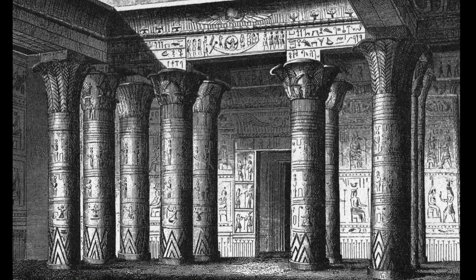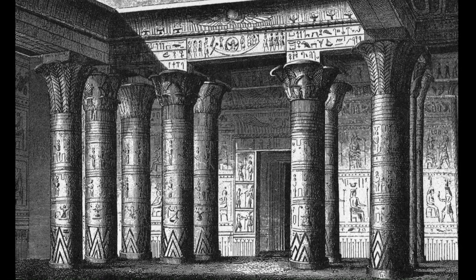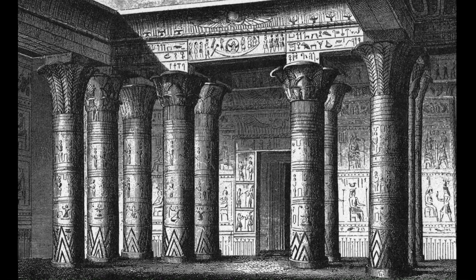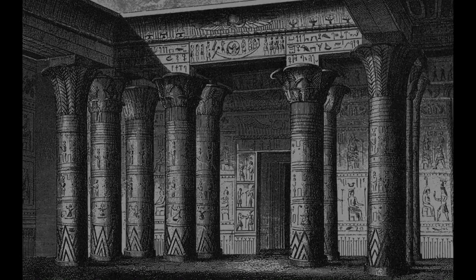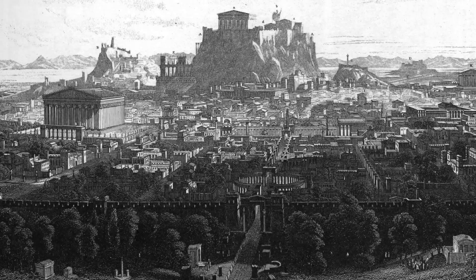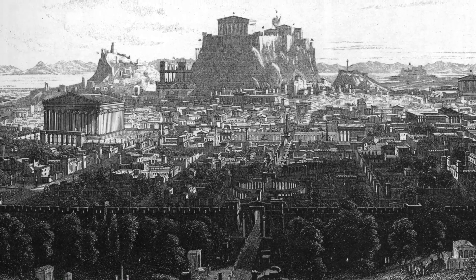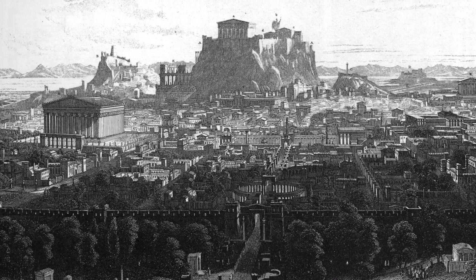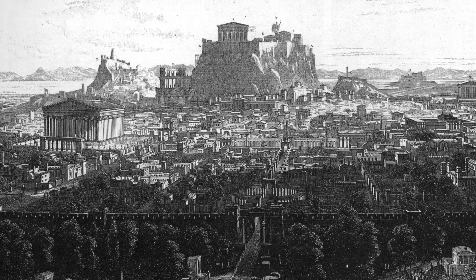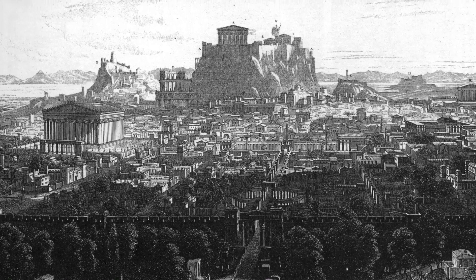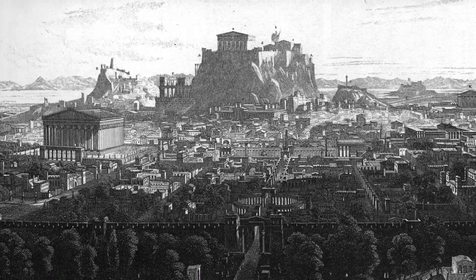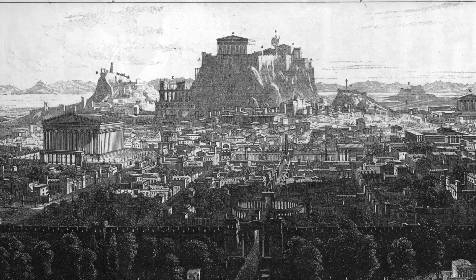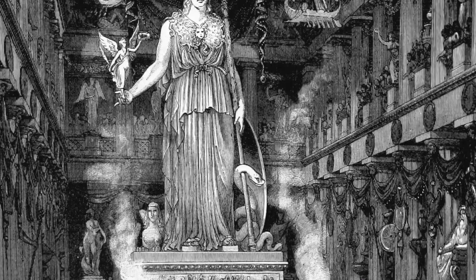This construction configuration would change the world. About 2,000 years after the pyramids were built in Egypt, the Greeks were constructing temples on a large rock outcropping in Athens we now call the Acropolis.